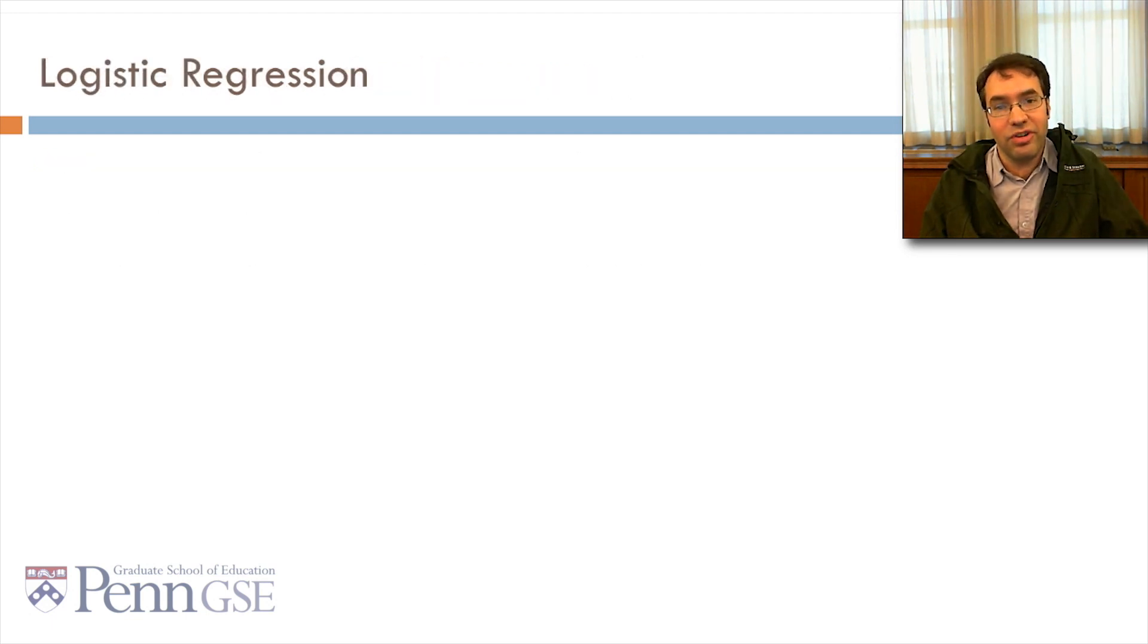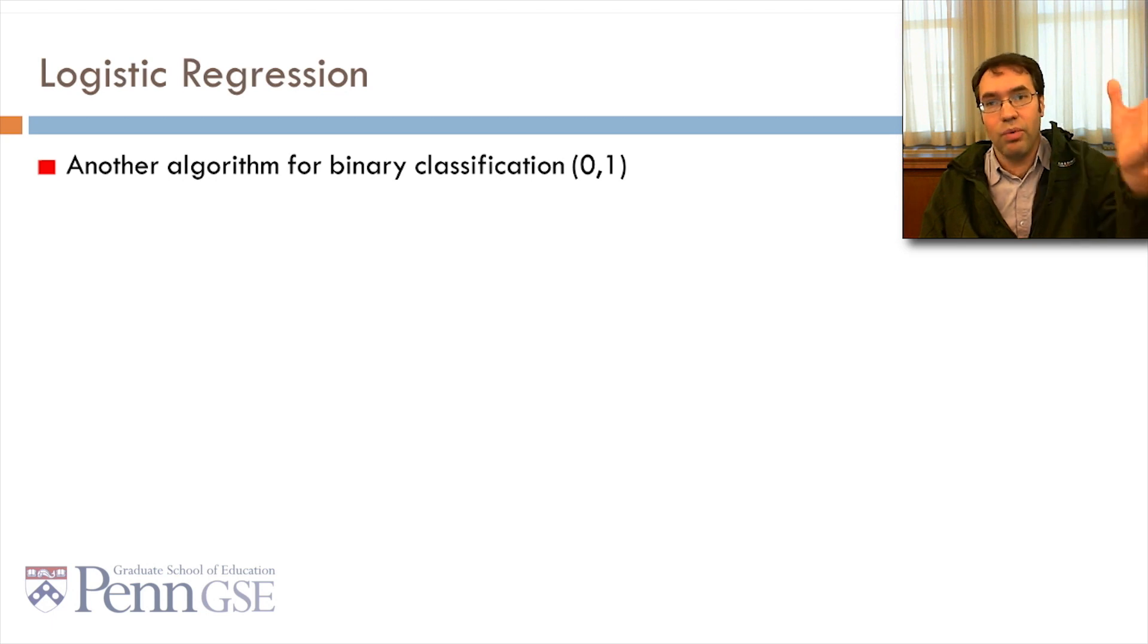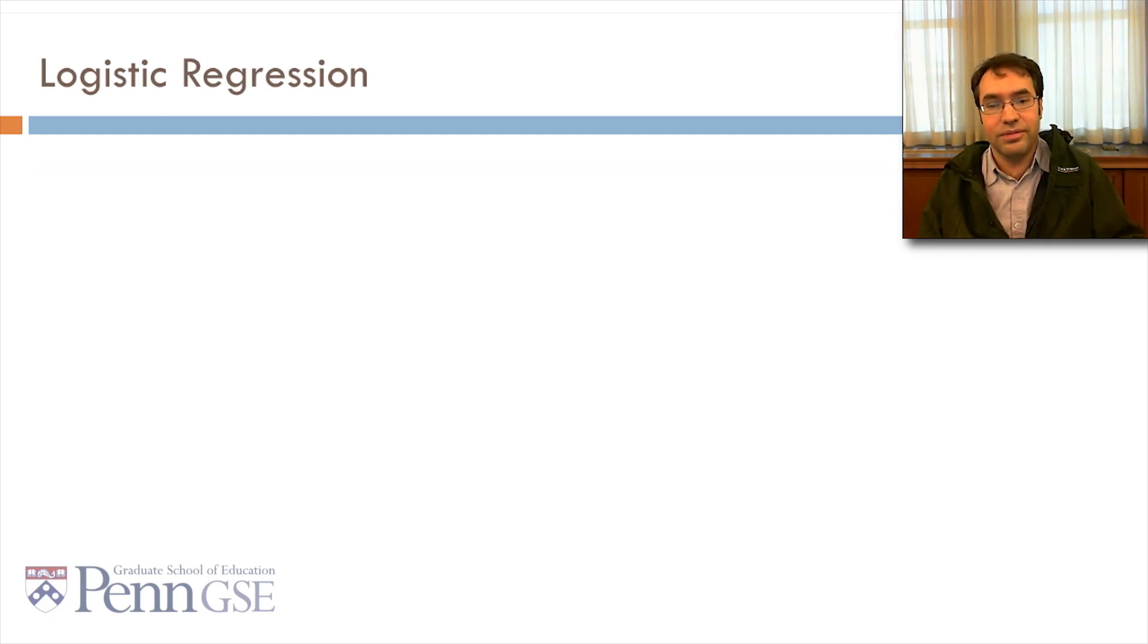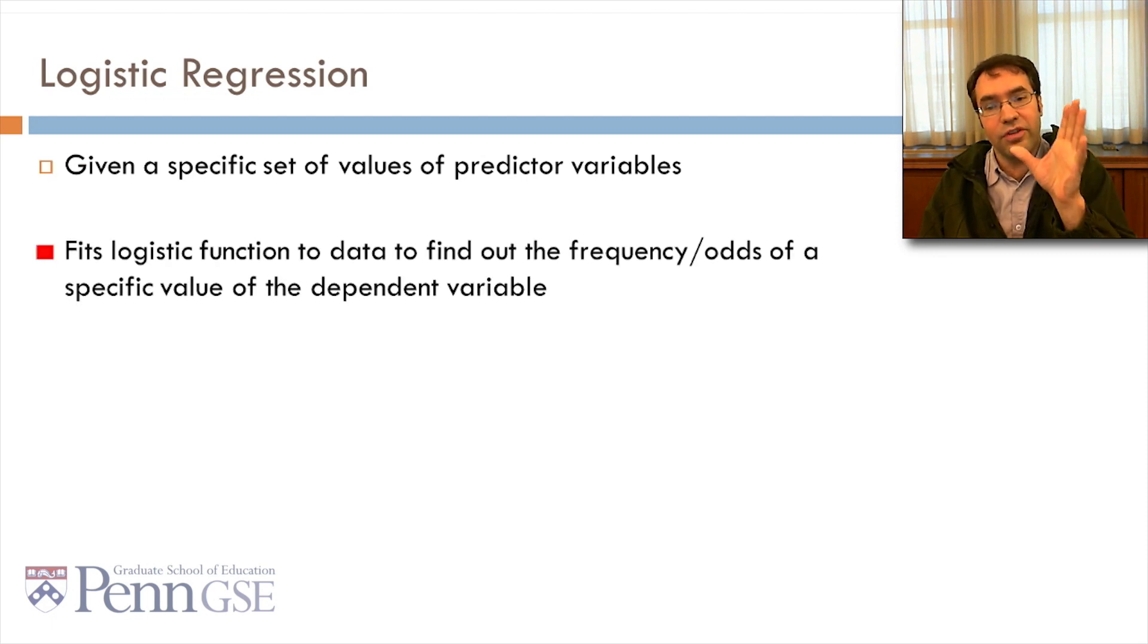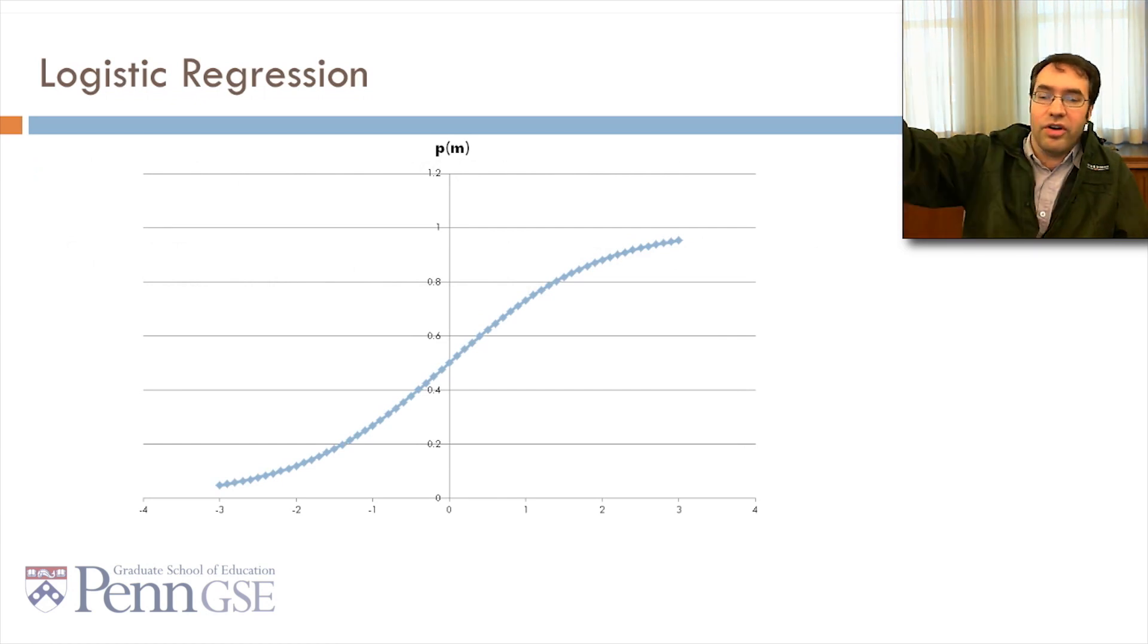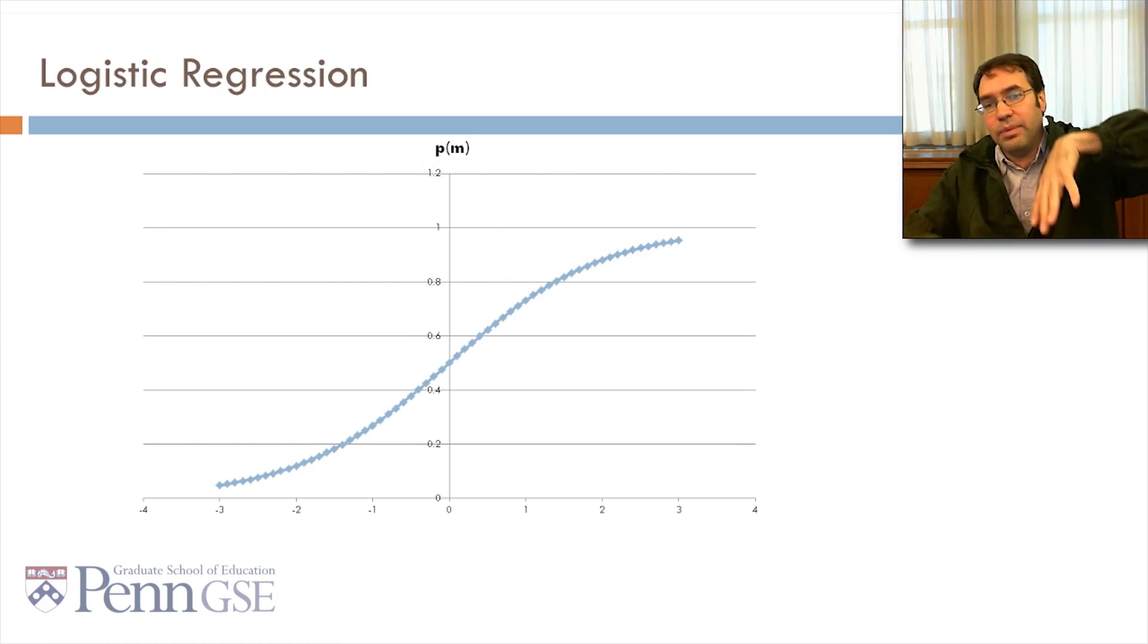Now, let's talk about logistic regression. Logistic regression is another algorithm for binary classification. Will the student drop out or not? Given a specific set of values of predictor variables, it fits a logistic function of data to find out the frequency or odds of a specific value of the dependent variable. And, here's a logistic function. They can actually be steeper or less steep, depending on some details.